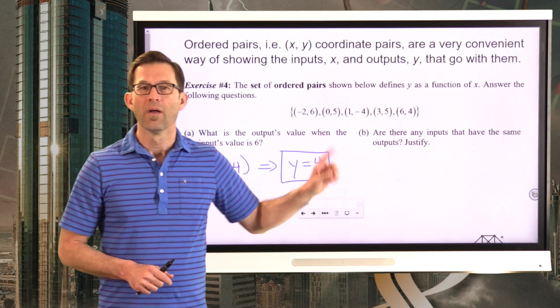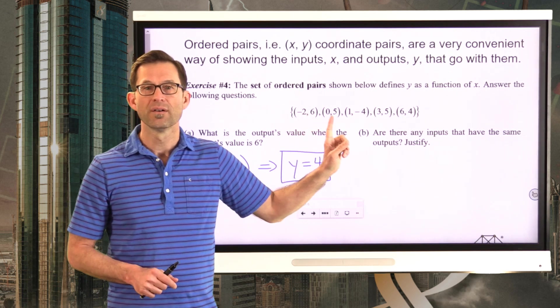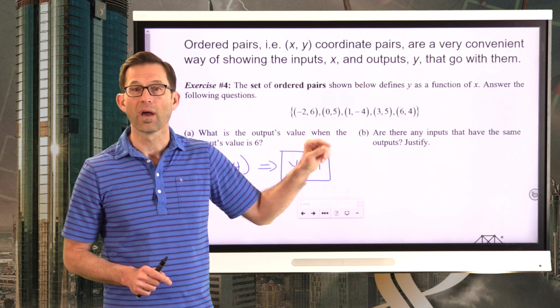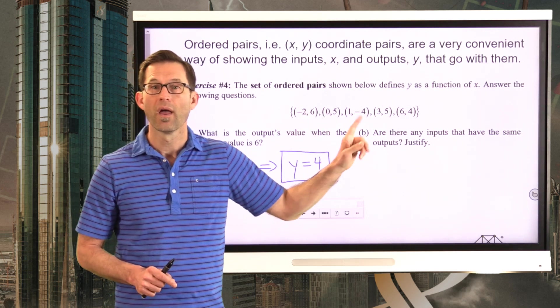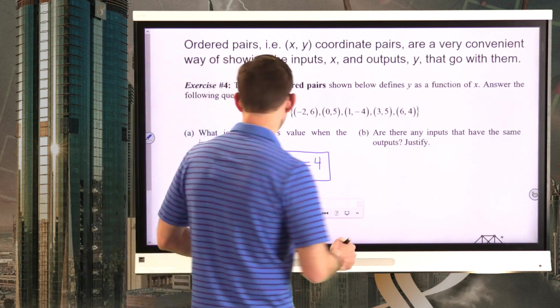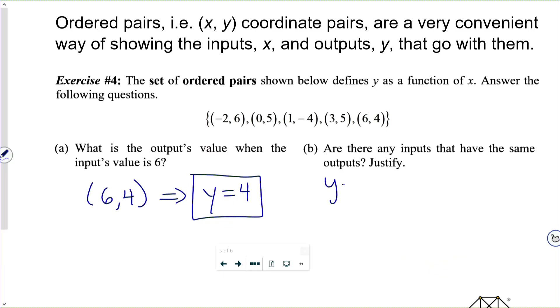You bet there are. Our outputs are 6, 5, negative 4, 5, and 4. So it should be pretty obvious that an input of 0 and an input of 3 both have outputs of 5. So that's this. x equals 0 and x equals 3 both have outputs of y equals 5.